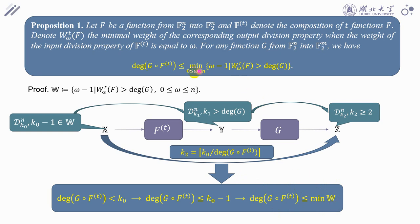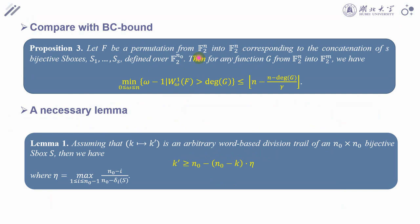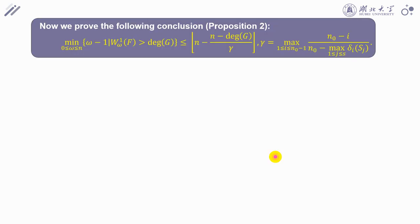Note that in this new bound, T is flexible. So now we set T to 1. We can have this conclusion, that our new bound is tighter than BC bound. In order to prove this conclusion, we need this lemma. It indicates the relation between the division property and the algebraic property of an S-box. Now, let us prove the proposition 2.